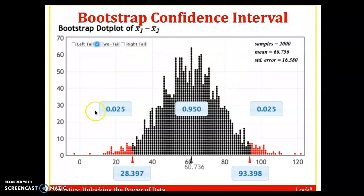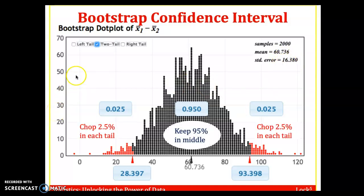Don't forget if we all did this, we'd all get a slightly different distribution. That standard error would be slightly different, but it should be around 16. For that 95% confidence interval, we want to keep the middle 95% and chop off 2.5% from each tail. That leaves us about 28 to 93 circuits, creating the 95% confidence interval.